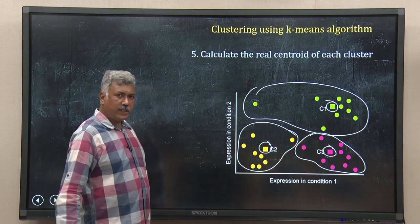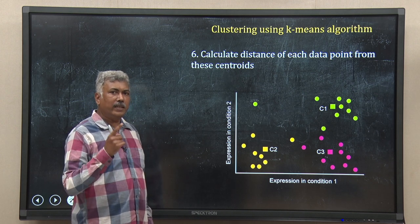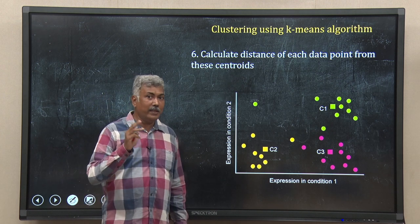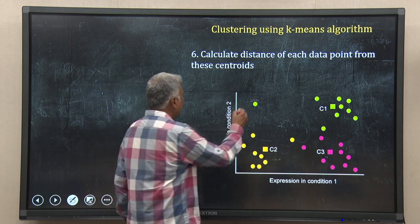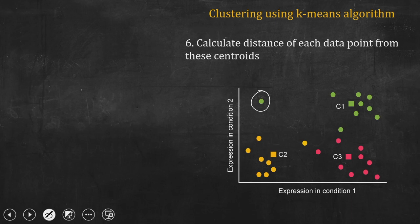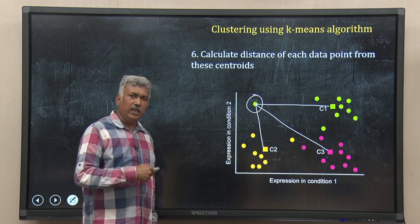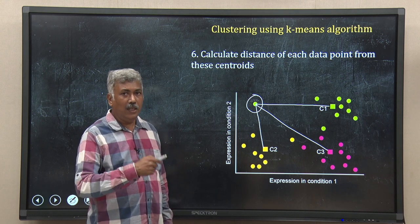Now I come to the sixth step. Again, for each data point, I calculate the distance from each of these three centroids. But remember, now the centroids are the real centroids, not the randomly seeded ones. Taking the same example data point, I calculate the distance from c1, from c2, from c3. In this way you calculate the distance of each data point from these newly assigned real cluster centroids c1, c2 and c3.